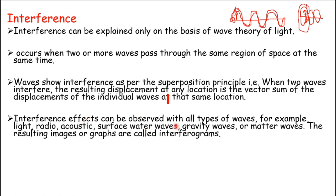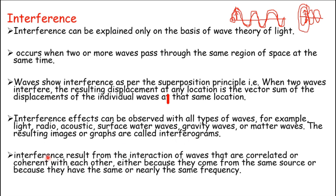Interference effects can be observed with all types of waves — for example, light, radio, acoustic, surface water waves, gravity waves, or matter waves. The resulting images or graphs are called interferograms. Interference results from the interaction of waves that are correlated or coherent with each other, either because they come from the same source or because they have the same or nearly the same frequency.